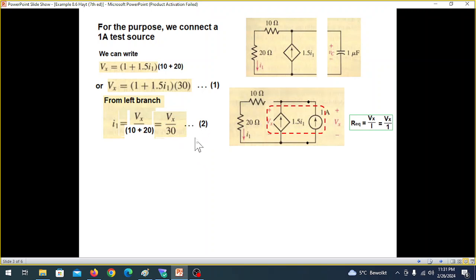you can also see that I1 is Vx divided by this or Vx over 30. So this is our second equation. Now using these two equations, we can find Vx.